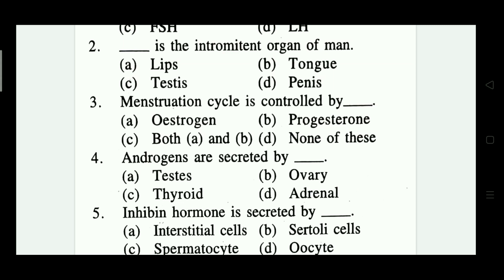Number four: androgens are secreted by — testis, ovary, thyroid, adrenal. Which answer is correct? Answer A — testis is the correct answer.